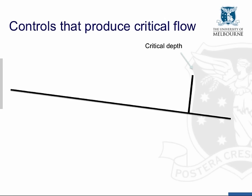Firstly, controls. Remember that at a critical flow, if we know the discharge, then we can estimate the depth. Critical flow is produced as flow passes over a weir — that's the transition from a mild slope to a steep slope. So subcritical to supercritical flow at normal depth, and we get critical flow at the crest of the weir.